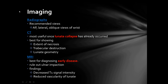Three imaging modalities are available: plain radiograph with AP, lateral, and oblique views; CT scan — most useful once lunate collapse has occurred, best for showing extent of necrosis, trabecular destruction, and lunate geometry; MRI — important for earlier diagnosis, helps rule out infection, with findings of decreased T1 signal intensity and reduced vascularity of the lunate.